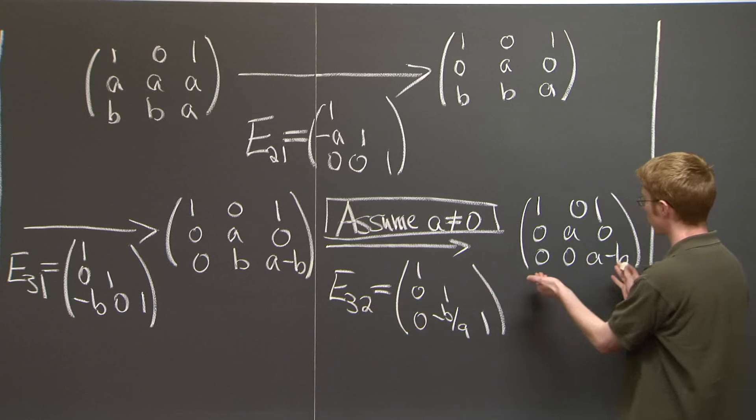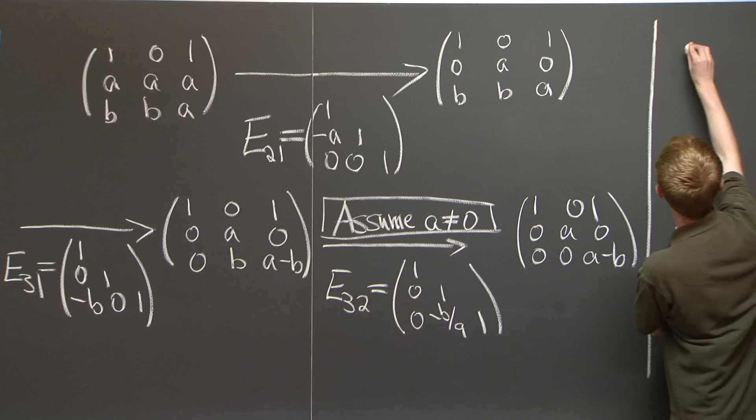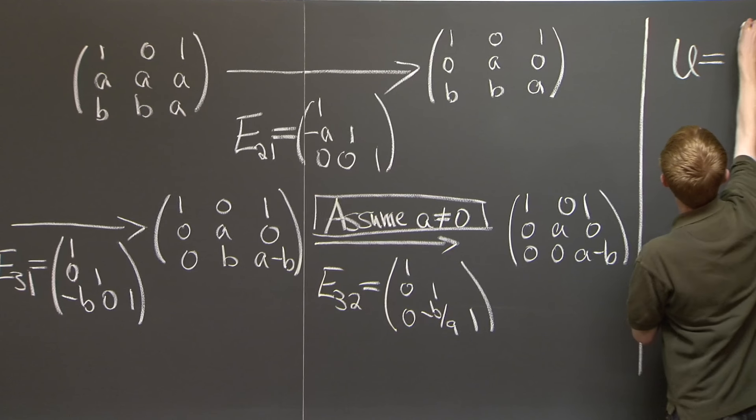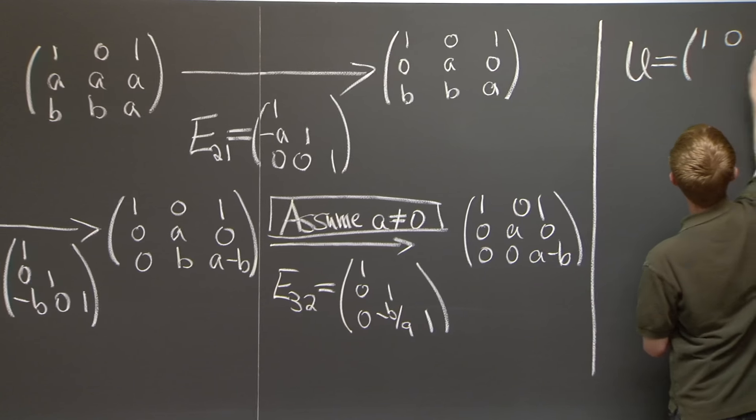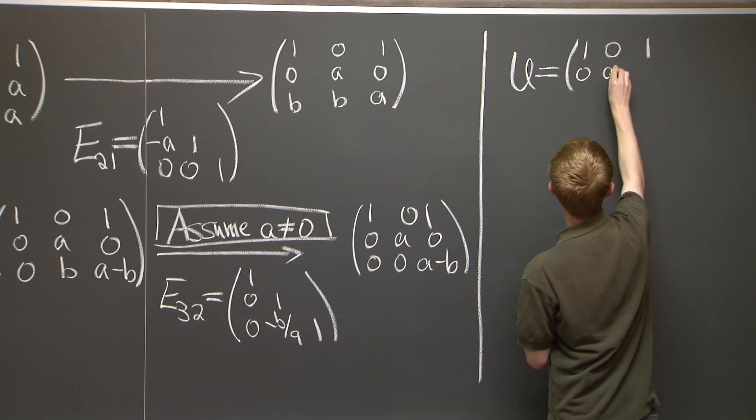so we found our U matrix. That's what elimination does. It gives us our U matrix. So let me write it up here: 1, 0, 1, 0, a, 0,